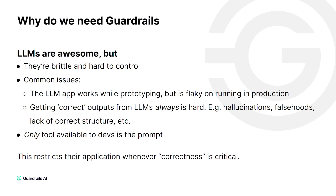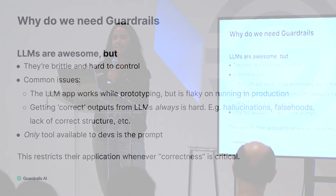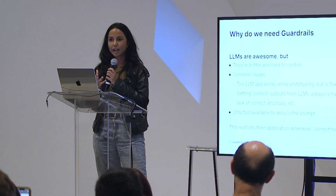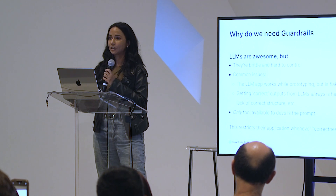So why do we need guardrails? I'm sure everybody here already knows this but I'll give a quick refresher. LLMs are absolutely awesome but they are brittle and hard to control. Common issues we all see when building with them in practice is that the LLM works while prototyping but is flaky, especially when running in production. Getting correct outputs from LLMs consistently is hard — common issues include hallucinations, falsehoods, lack of correct structure, etc. Furthermore, the only tool available to you as a developer is the prompt. So whenever correctness is a critical requirement, LLMs are currently severely restricted.